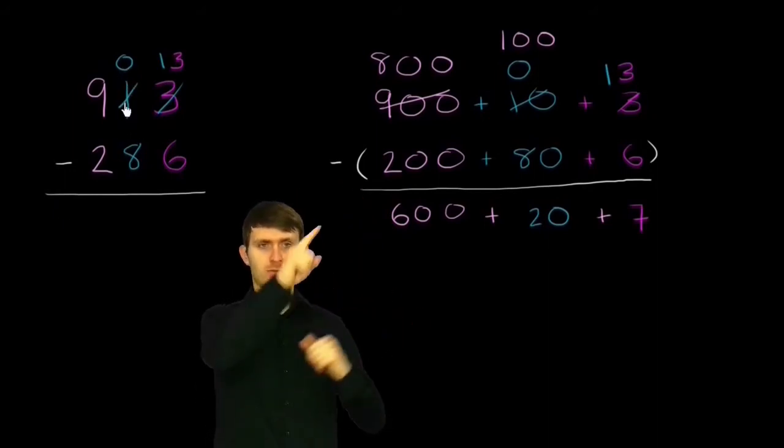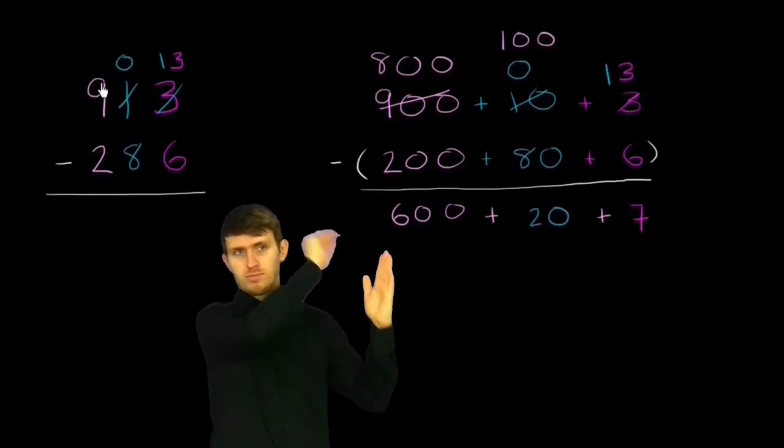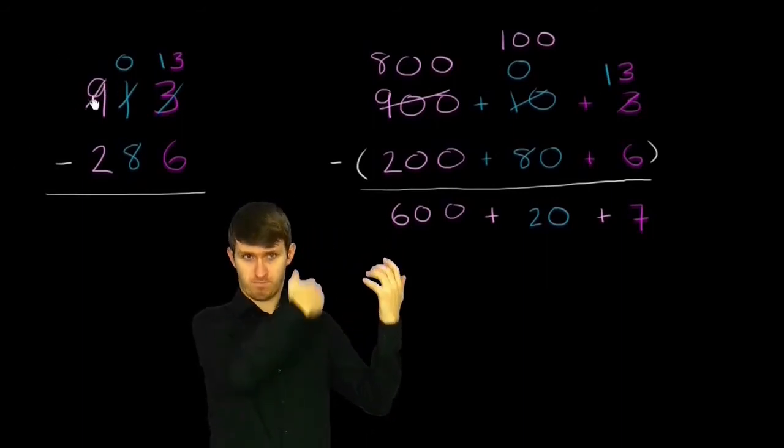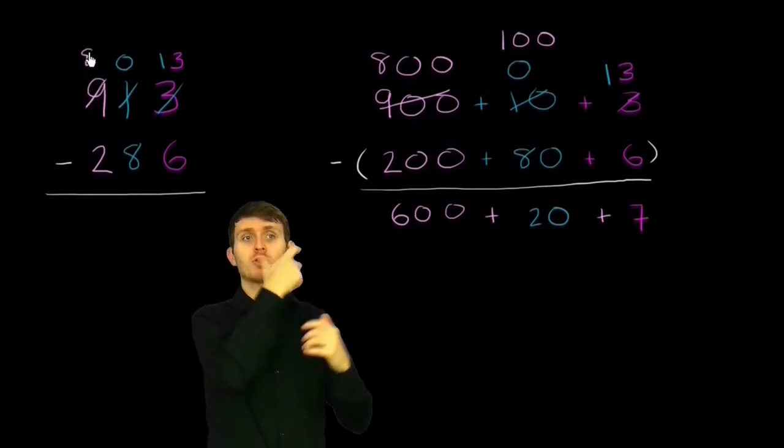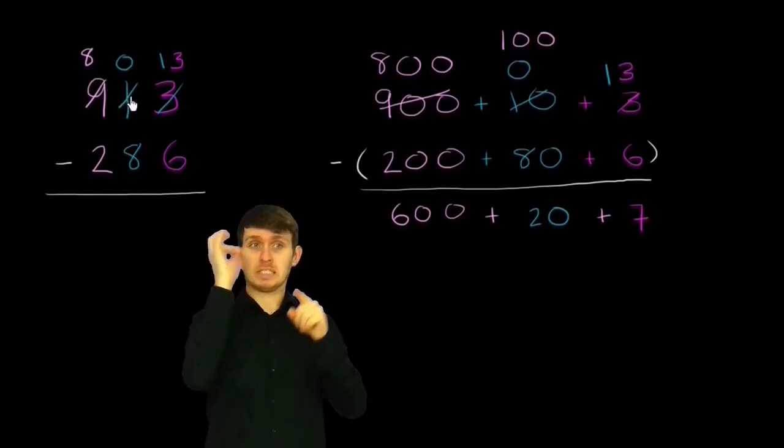But now we have a problem in the tens place. How do we subtract 8 from 0? Well, we could take 100 from the hundreds place. So 900 becomes 800. And give that 100 to the tens place. So you give the 100 to the tens place.